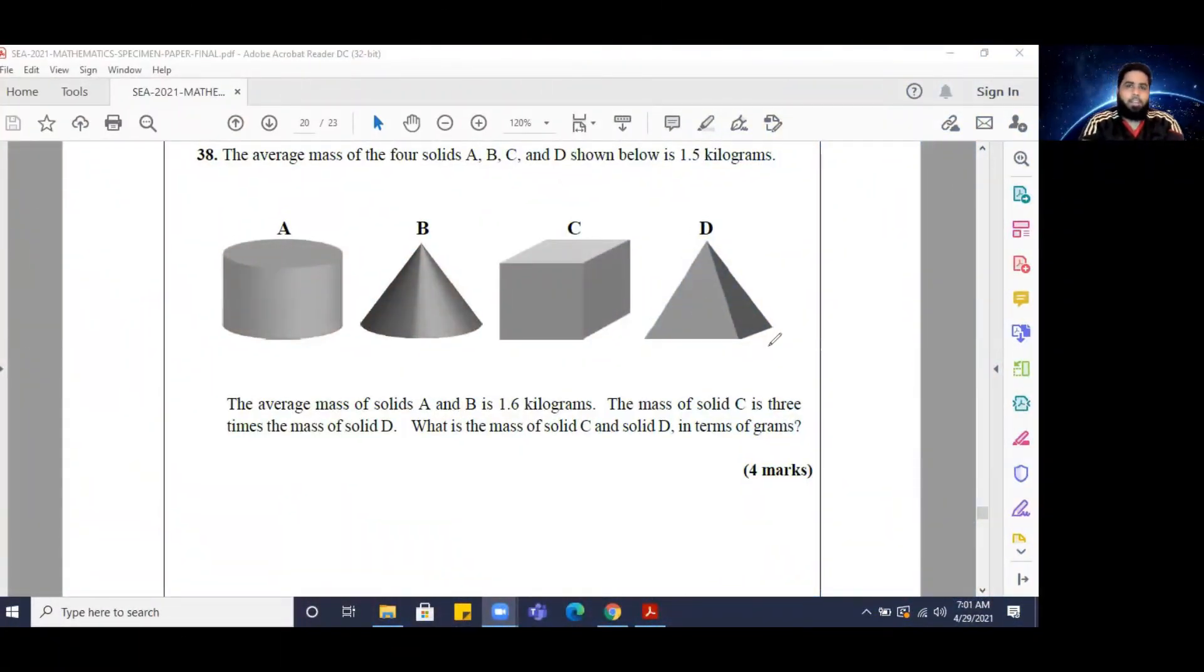Good evening, assalamu alaikum guys, and welcome back to the SAS specimen paper series here on the C Results Academy. We are on number 38 in section three, and it reads: the average mass of the four solids A, B, C, and D shown below is 1.5 kilograms.